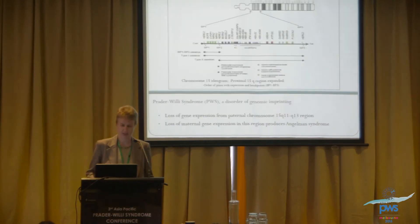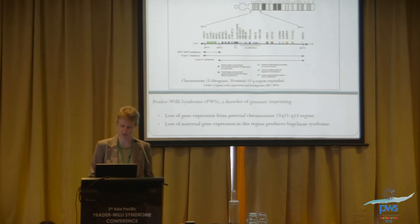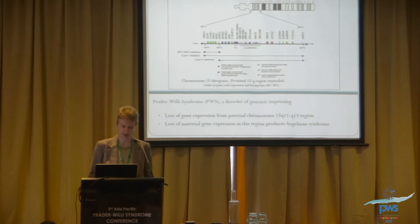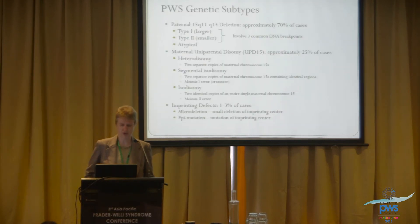This is essentially a cartoon of chromosome 15, and the area that is expanded is the q11 through q13 region, showing the different genes in that region and the three separate breakpoints. As we know, Prader-Willi syndrome is a disorder of genomic imprinting — you lose gene expression from the paternal chromosome. If you lose gene expression from the maternal chromosome, you get Angelman syndrome.